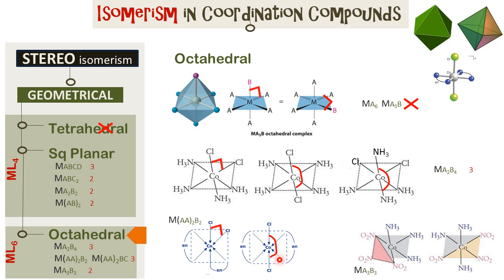This is of type MA3B3, and here we see that all the NO2 ligands are at 90 degrees between each other, as are the NH3 ligands. In the other isomer, NH3 is at 180 degrees and NO2 is also at 180 degrees from each other. So there are two isomers possible in this situation.